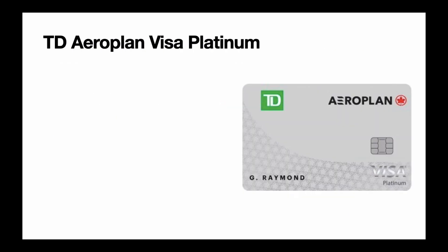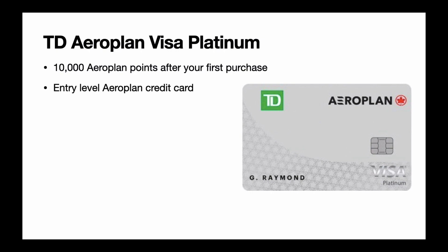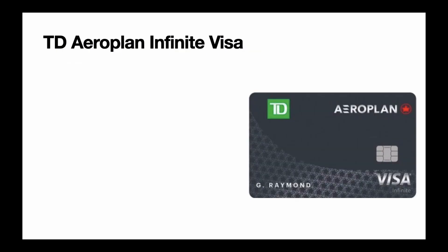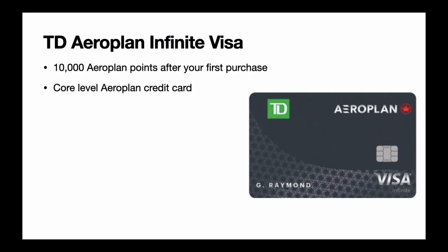Next is the TD Aeroplan Visa Platinum card, which gives you 10,000 Aeroplan points after your first purchase. This is an entry-level Aeroplan credit card with an annual fee of $89, rebated for the first year. Next is the TD Aeroplan Infinite Visa, which also gives you 10,000 Aeroplan points after your first purchase. It's a core-level Aeroplan credit card with a $139 annual fee, also rebated for the first year.